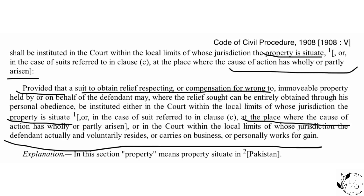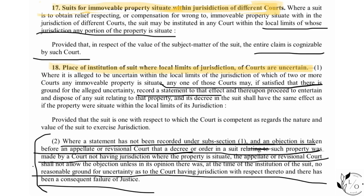Now, section 17 says: 'Suit for immovable property situate within the jurisdiction of different courts.' Simply put, if more than one court has jurisdiction over the disputed immovable property, the suit may be instituted in any court within the local limits of whose jurisdiction any portion of the property is situated. If even any part of the disputed property falls within a court's jurisdiction, that court is competent to hear the suit.